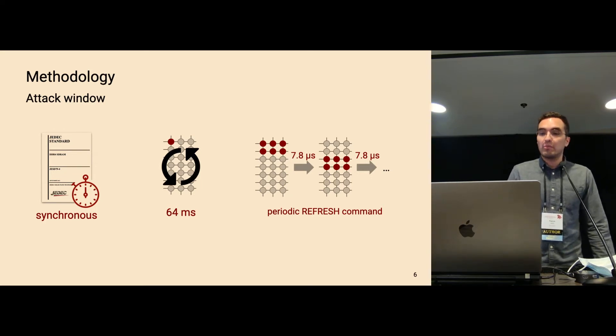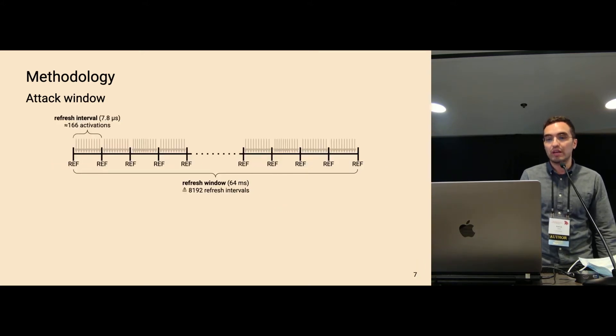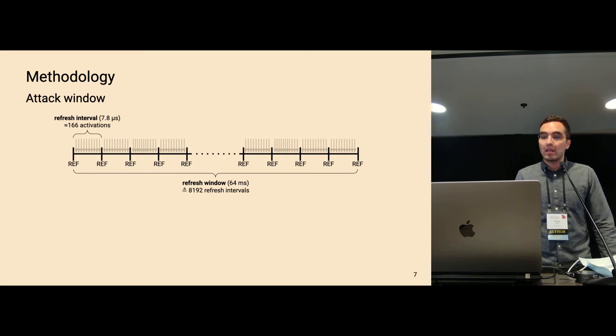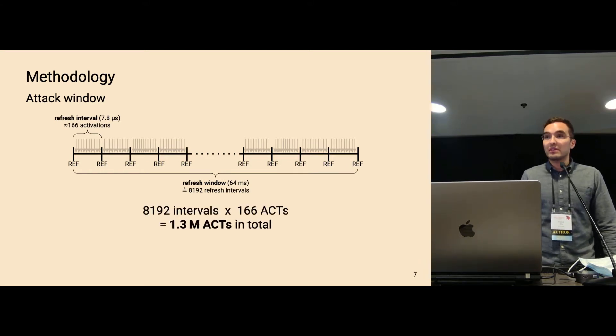So let me explain the row hammer problem a bit more in depth from an attacker's perspective. So you have to know that DRAM uses the DDR protocol. And this protocol is specified by the JEDEC standard and is a synchronous protocol. This means that all DRAM commands must adhere to specific timing requirements. One of these timing requirements is that each cell on a DRAM device has to retain its information for at least 64 milliseconds. And to achieve this, the memory controller in the CPU sends periodic refresh commands. On DDR4 devices, on average, every 7.8 microseconds. And each of these refresh commands refreshes a few of these cells in a DRAM device. And this can be visualized in a timeline. So here you can see a refresh window of 64 milliseconds. And in between two consecutive refresh commands, we can issue around 166 activations. So this means that an attacker has around 1.3 million of activations where they can spread hammering their aggressors.